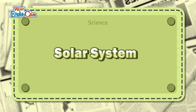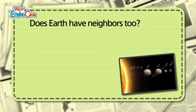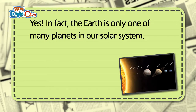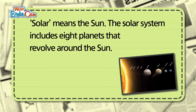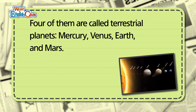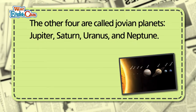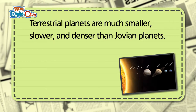Solar system. Does Earth have neighbors too? Yes. In fact, the Earth is only one of the many planets in our solar system. Solar means the sun. The solar system includes eight planets that revolve around the sun. Four of them are called terrestrial planets: Mercury, Venus, Earth, and Mars. The other four are called Jovian planets: Jupiter, Saturn, Uranus, and Neptune. Terrestrial planets are much smaller, slower, and denser than Jovian planets.